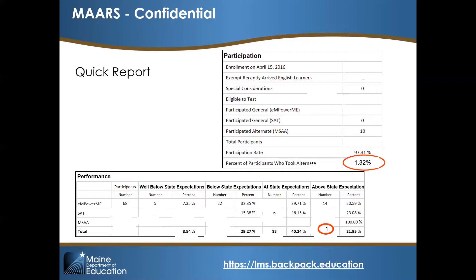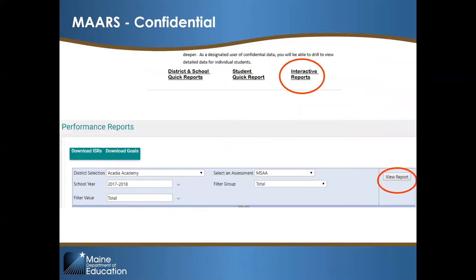A further look at the interactive reports will provide the performance scores for students in your district. Should this student have taken the alternate assessment? Let's take a closer look. Back on the MARS homepage, click on the interactive reports button found on the bottom right-hand side. Performance reports are then available — you will need to choose your district and test name. For this screenshot, Acadia Academy appears as it's the first option on the drop-down, and I have chosen MSAA as the test name.